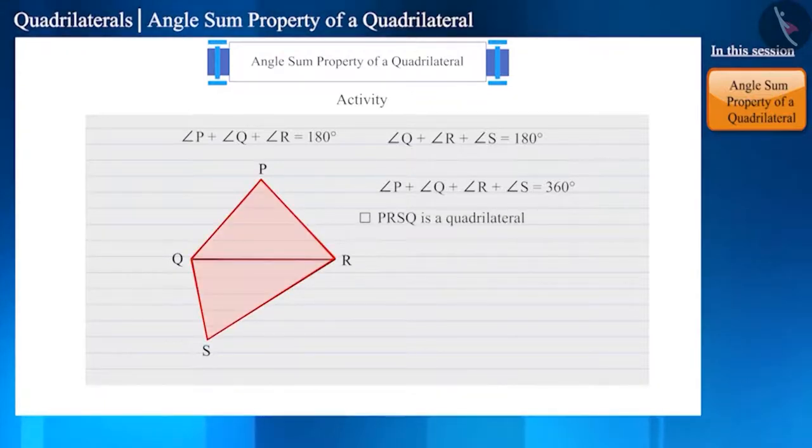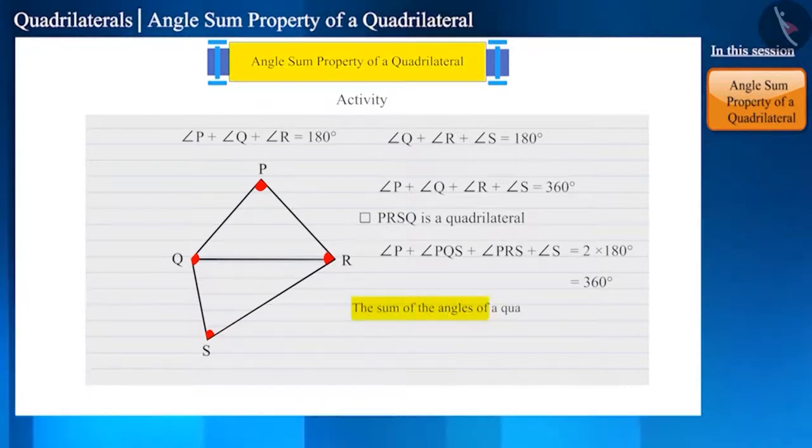In comparison to the triangle, a quadrilateral has one extra angle, but the sum of the angles of a quadrilateral is two times the sum of the angles of a triangle. This is what we call the angle sum property of a quadrilateral.